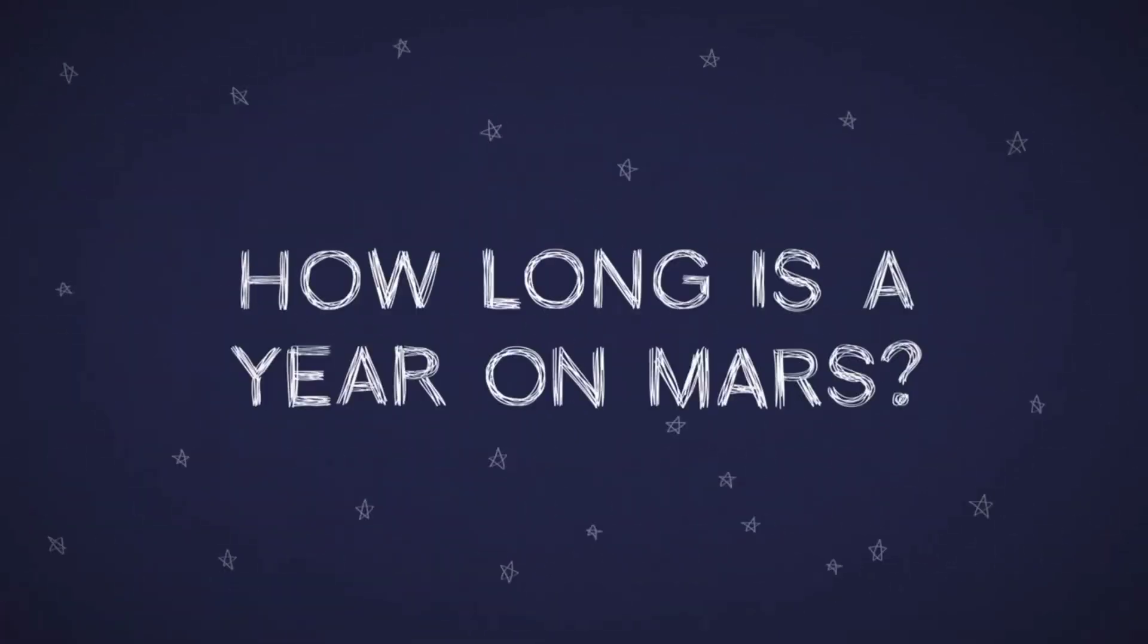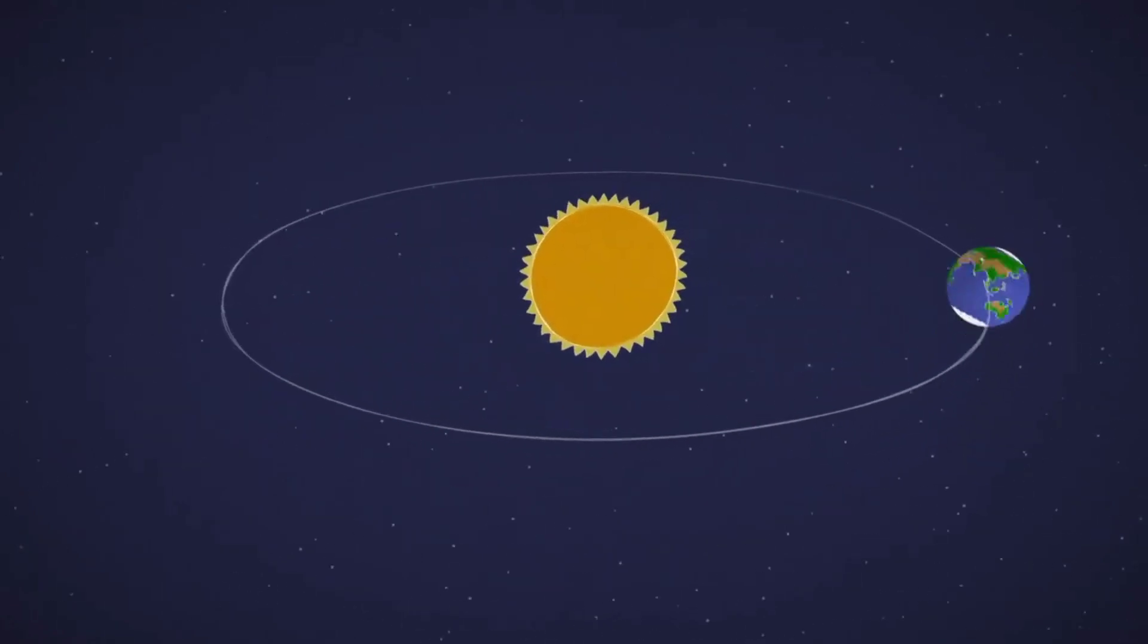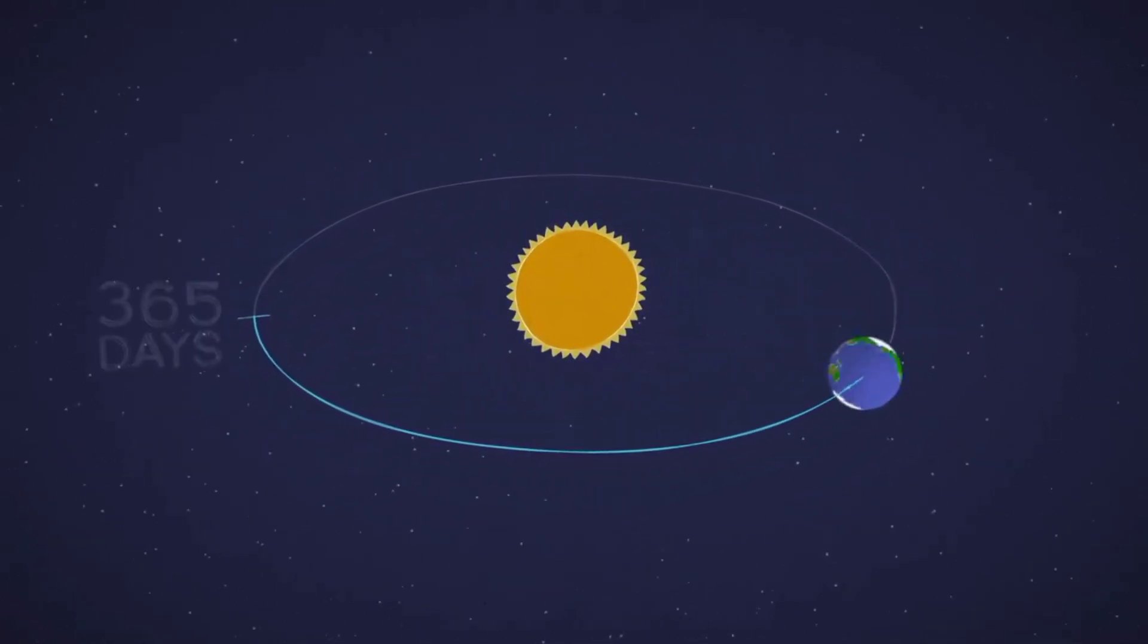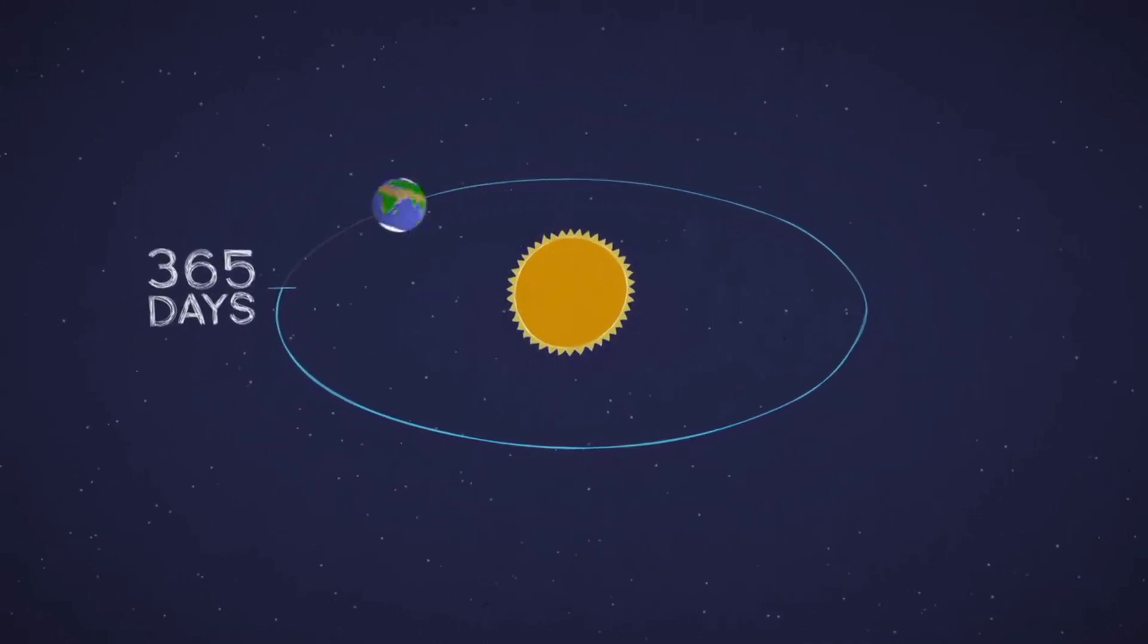How long is a year on Mars? The Earth zips around the Sun at about 67,000 miles per hour, making a full revolution in about 365 days, one year on Earth.